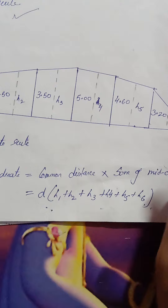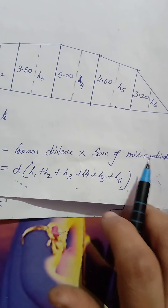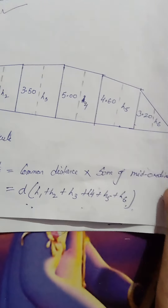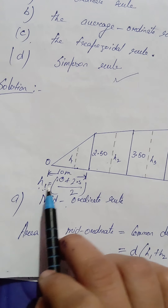The following offsets were taken from a chain line to an irregular boundary line at an interval of 10 meters. So here D is 10 meters — the common interval. These ordinates range from 0 to 0.50, and we are having 7 ordinates. Compute the area between the chain line, the irregular boundary line, and the end of offsets by these methods.